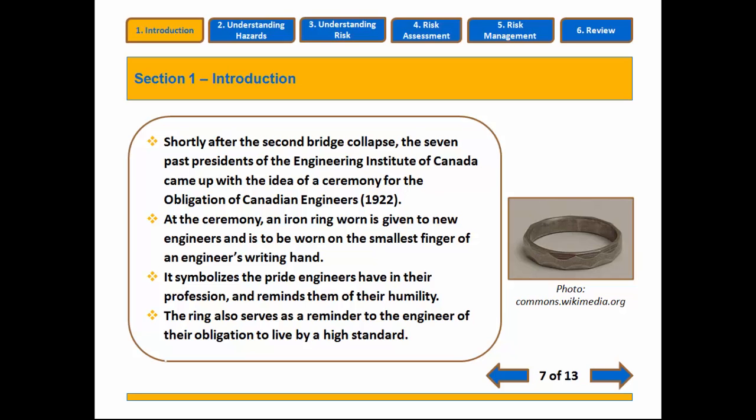The iron ring, which is a Canadian symbol associated with engineering, worn by engineers typically on the smallest finger of their dominant hand, is a reminder of what happens when risks are not properly managed. There is a significant responsibility that rests on the shoulders of everyone, but especially engineers, to be aware of and manage risk effectively.